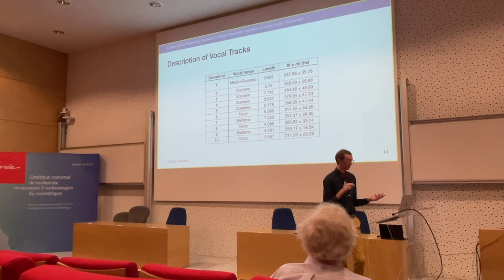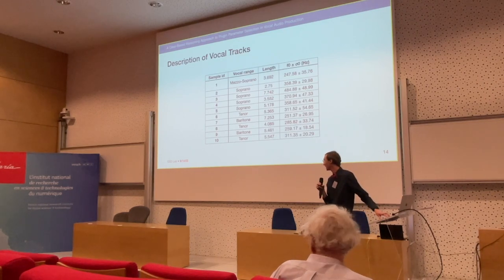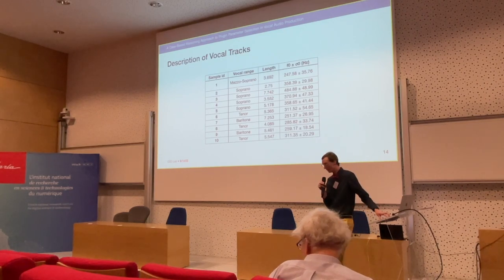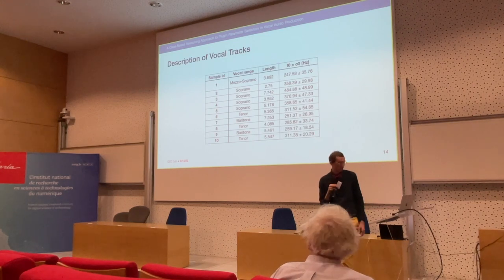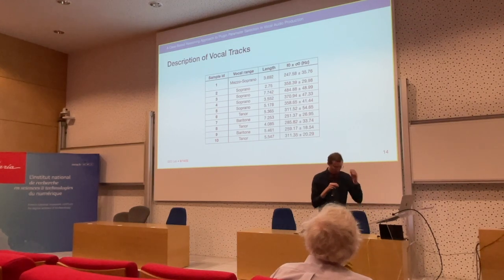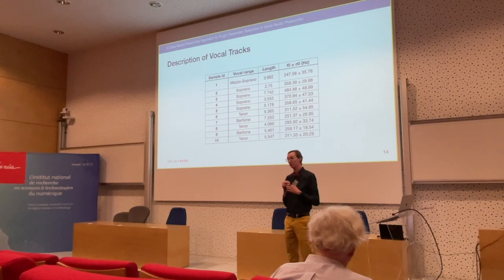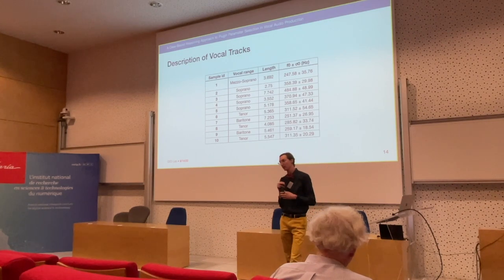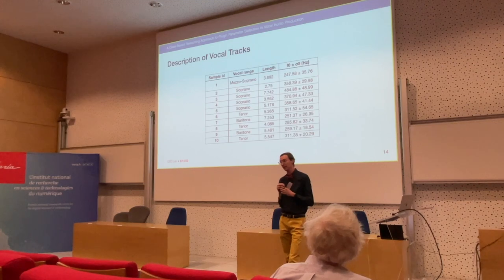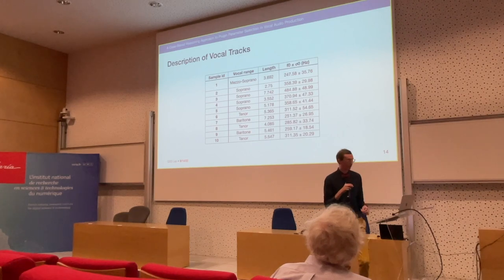I'll play two tracks quickly. This is sample ID one — [audio plays]. And this is sample six — [audio plays]. The aesthetic goal was either acoustic for the first group or electric, but it mainly was acoustic. The tenor-leaning was R&B, and you can kind of hear that inflection in the voice.